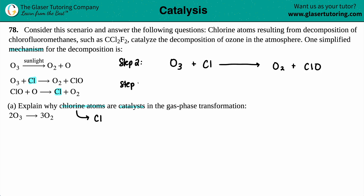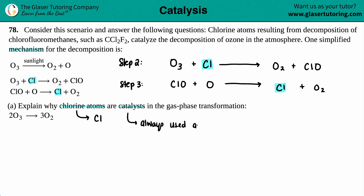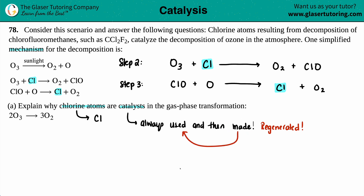And then for the third step: ClO + O → Cl + O₂. Now we've identified the chlorine atom on the reactant side and then the chlorine atom on the product side. Why is this acting as a catalyst? Catalysts are always used and then made — they are always going to be regenerated. If you make something, you can then use that up, and through the steps, if it's made again, it will be used again.